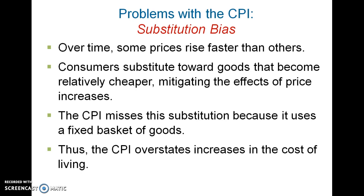For example, if you have in a typical consumer's basket five pounds of steak, and let's say the price doubles, in reality the consumer is going to cut back on how much steak that he or she would buy. But for the CPI, because the basket is fixed, it would still say that you have five pounds of steak in that basket even though the price has doubled. It will make the basket look like it's more expensive than what the consumer's real basket is, therefore overstating the cost of living and then overstating the inflation rates.